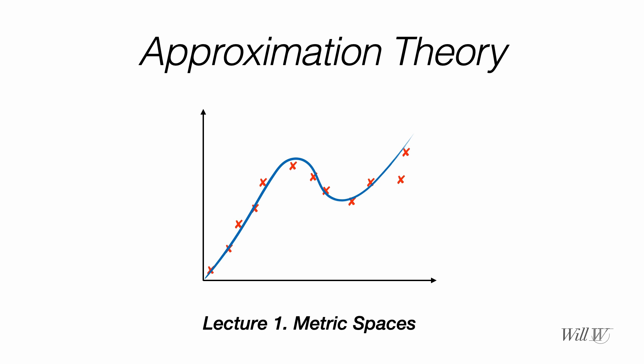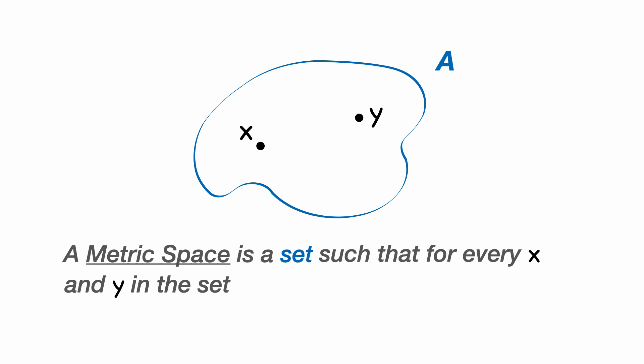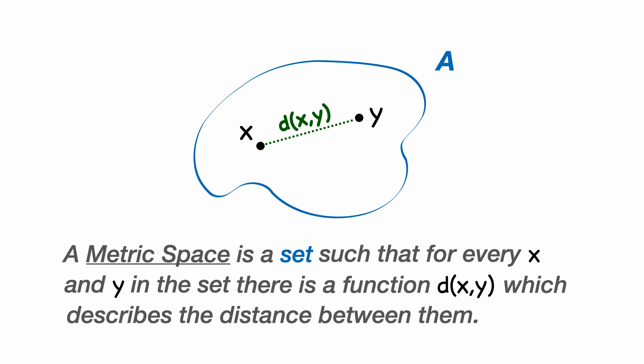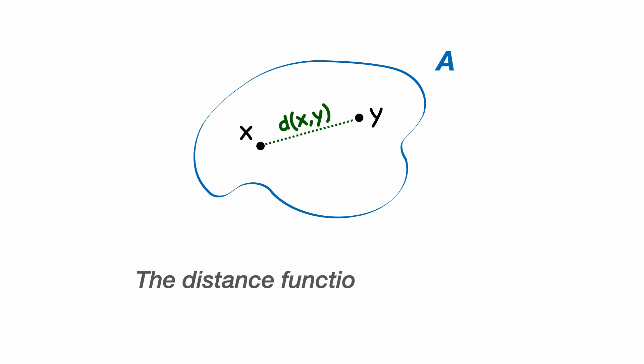Hello everyone and welcome to this first video in a series on approximation theory. In this first one we'll talk about metric spaces, which is all about how we can mathematically define what a distance is. So a metric space is a set, and we'll call this one A, such that for any two elements of that set, x and y, we can define the distance between them using a function we write as d(x,y), which we use to calculate or describe the distance between them.